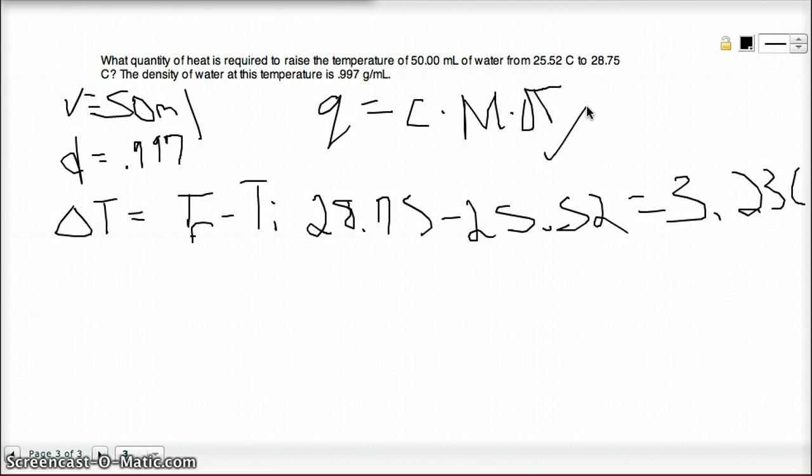Well, we have change in temperature. They expect us to know C for this problem. And you should know that the specific heat of water is always going to be 4.184 joules per gram kelvin. And you just have to commit that to memory. So we have C.